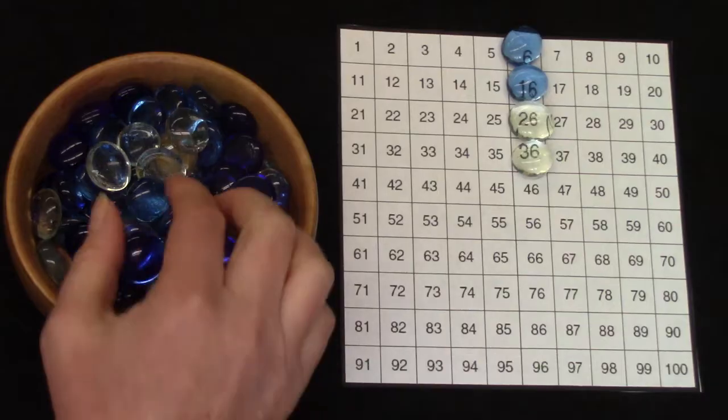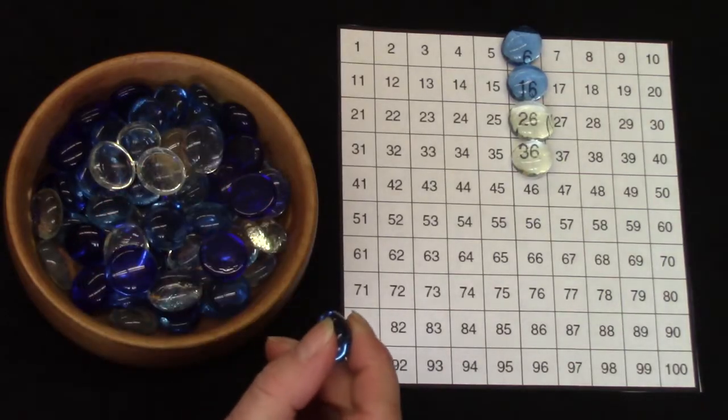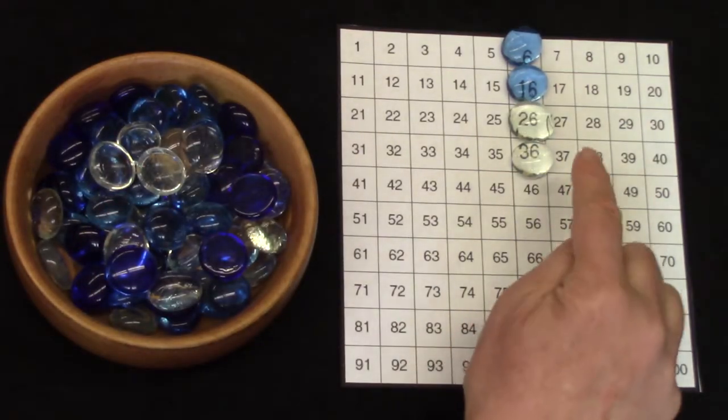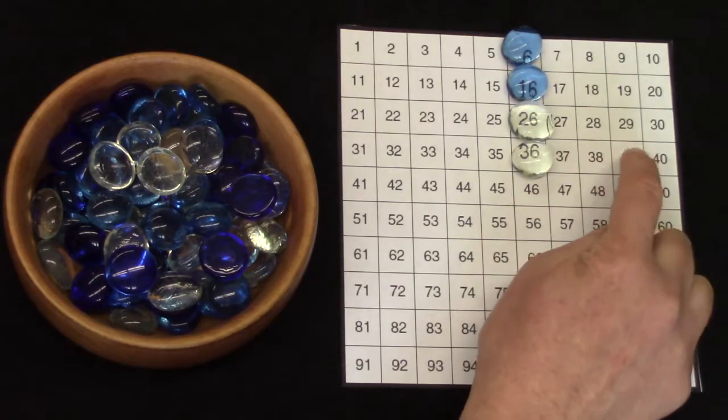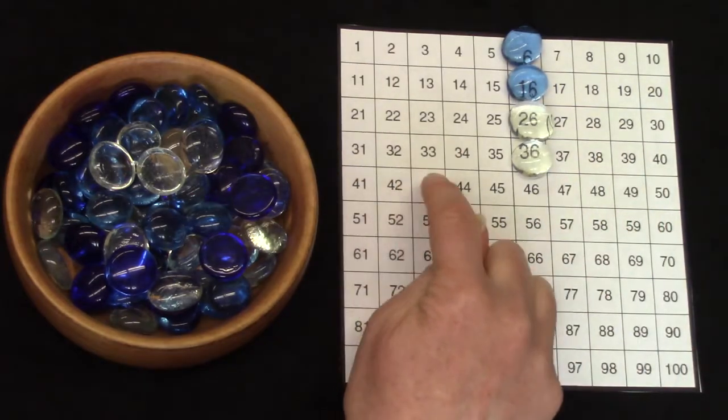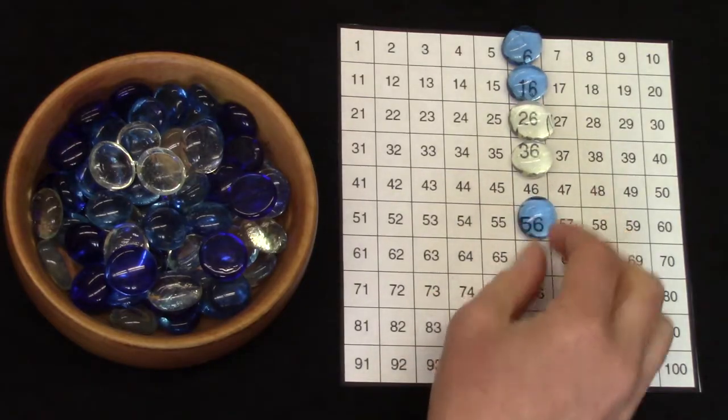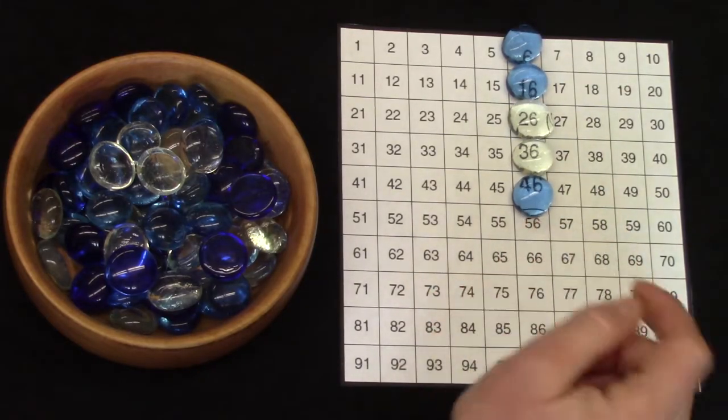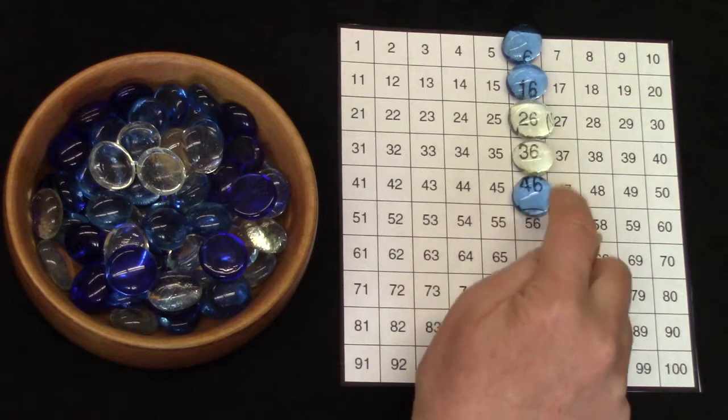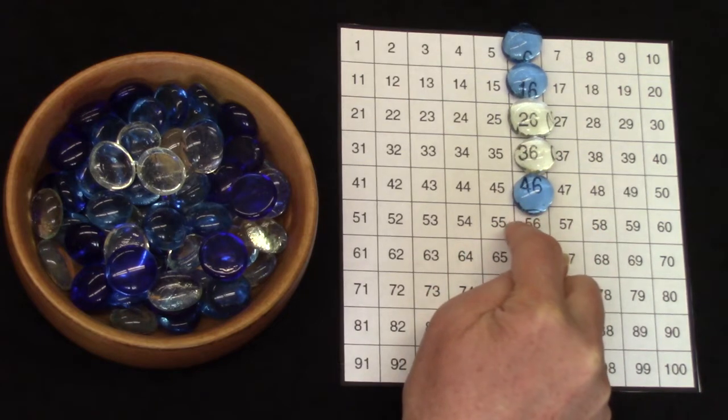Can you guess what number is going to come next? Well let's count it out: 1, 2, 3, 4, 5, 6, 7, 8, 9, 10. Let's cover 46 with our gem. 36 plus 10 more is 46.